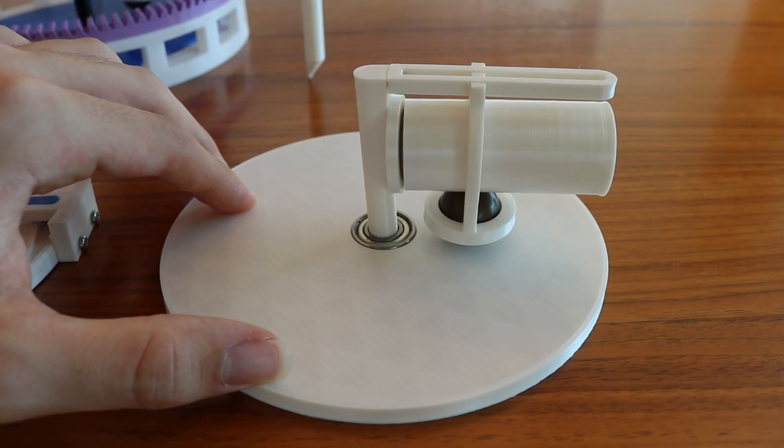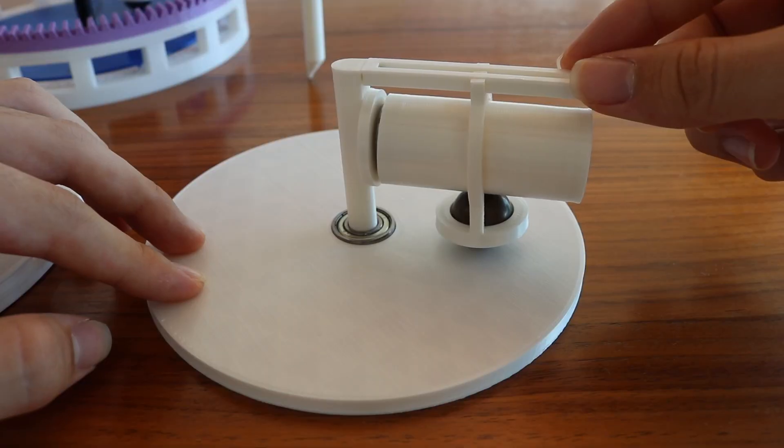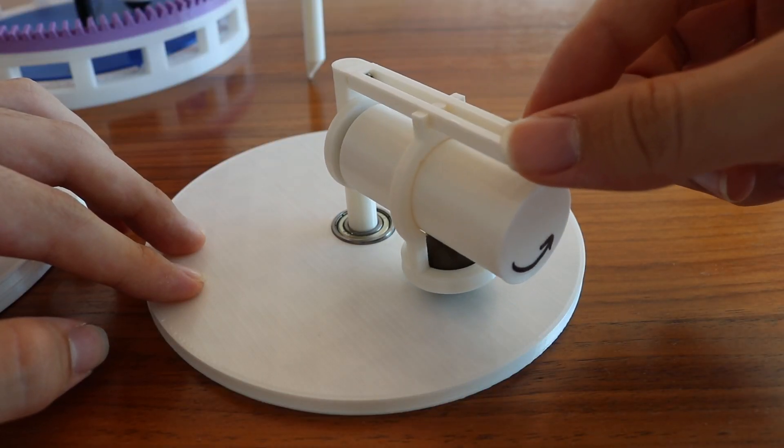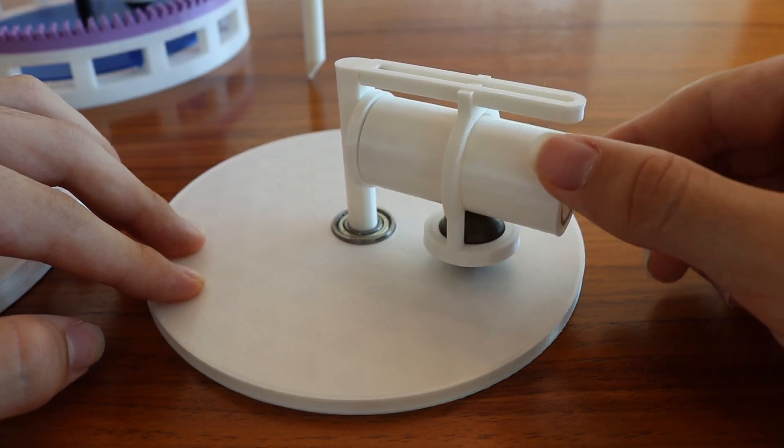The way that this mechanical integrator works is that this pin controls the position of the sphere. Since the entire top half of the mechanism is rotating, the ball rotates against the bottom disc, and that rotates this barrel, which in turn drives the final output.